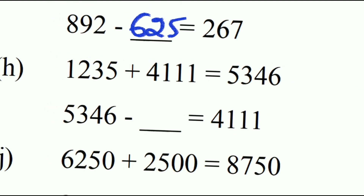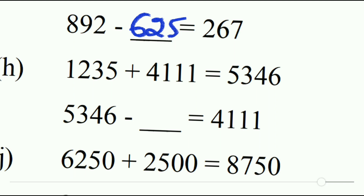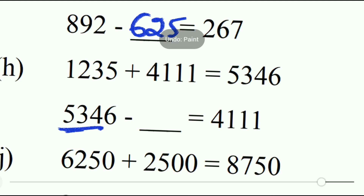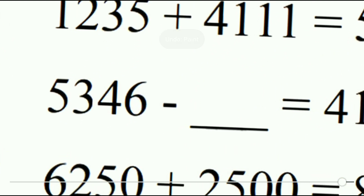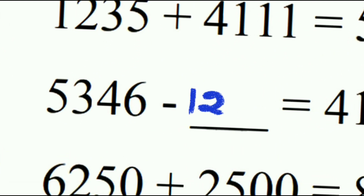Next: two addends given — 1235 and 4111. The total sum is 5346. We have to fill the blank with the right addend. The total sum minus the blank gives 4111, so the remaining addend is 1235.